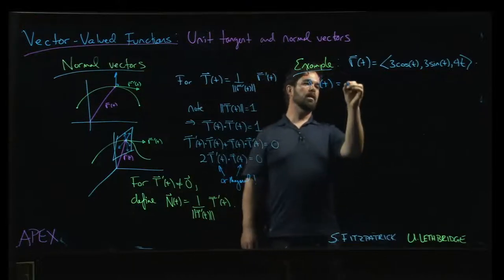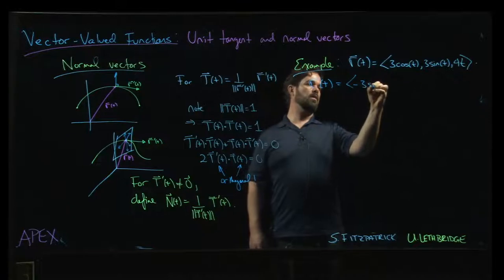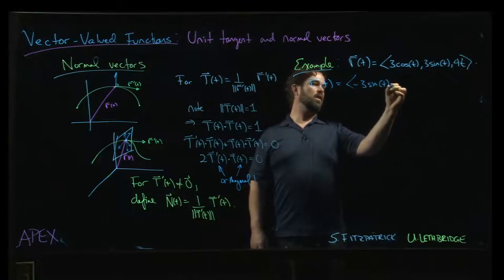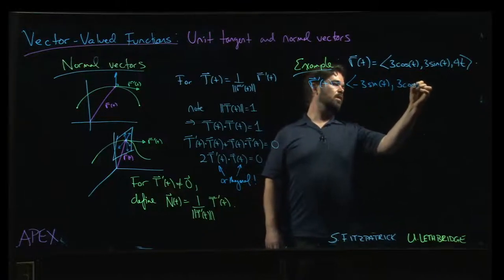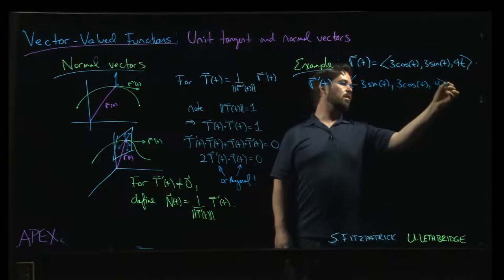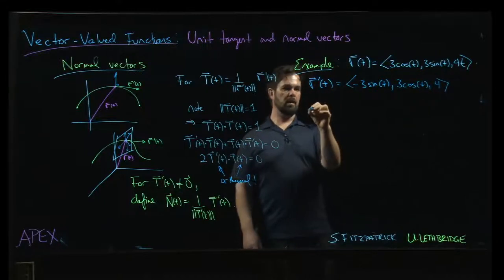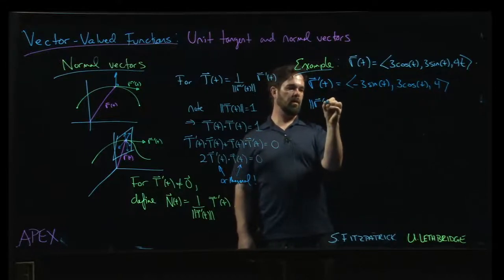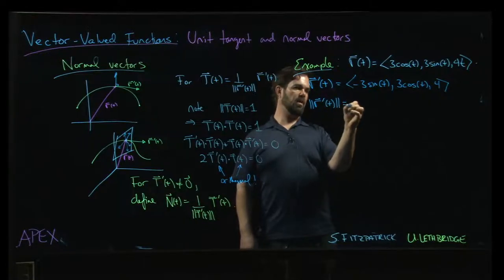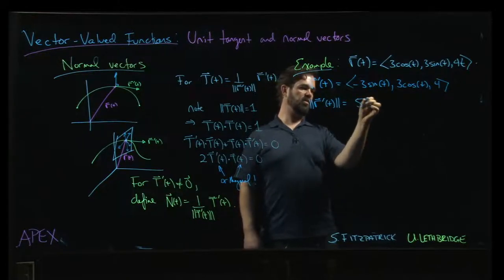So r prime is going to be minus 3 sine t, 3 cosine t and 4. The magnitude of r prime, I'll skip the steps, comes out to be simply 5.